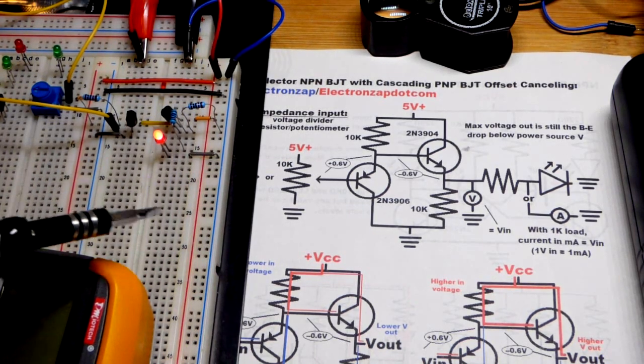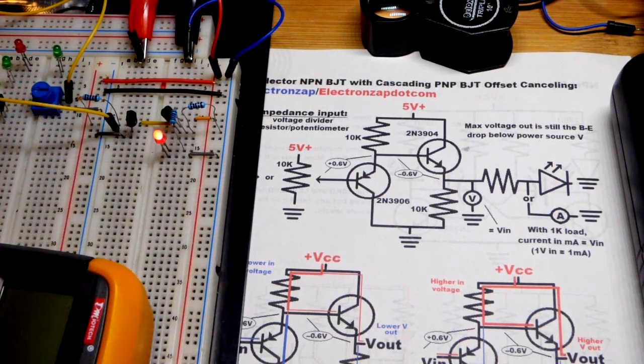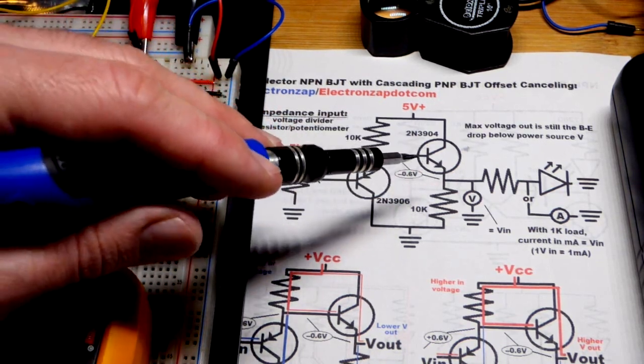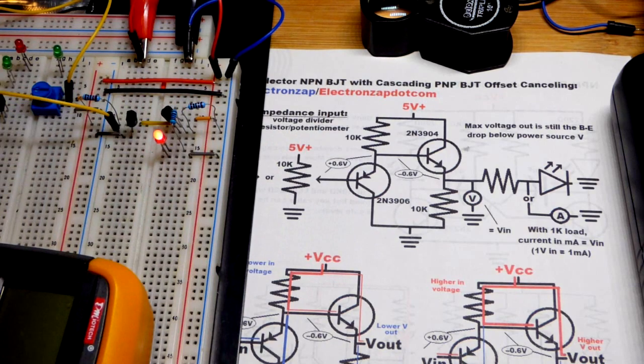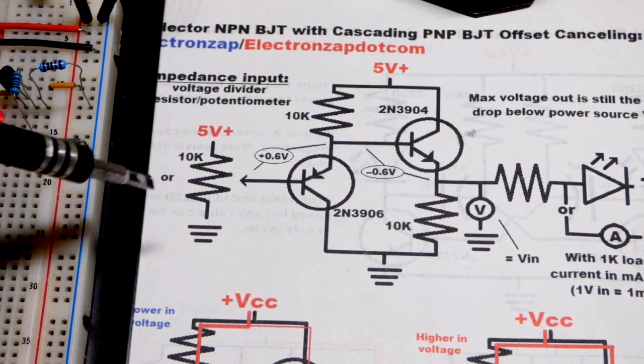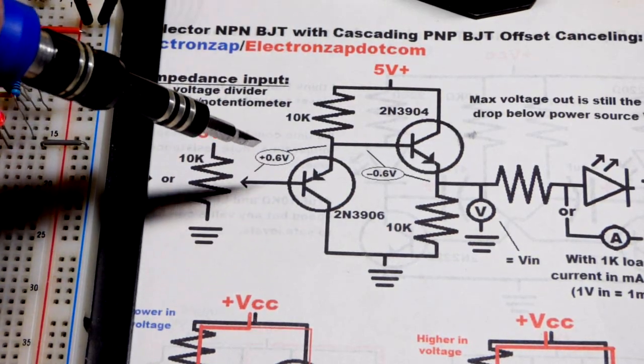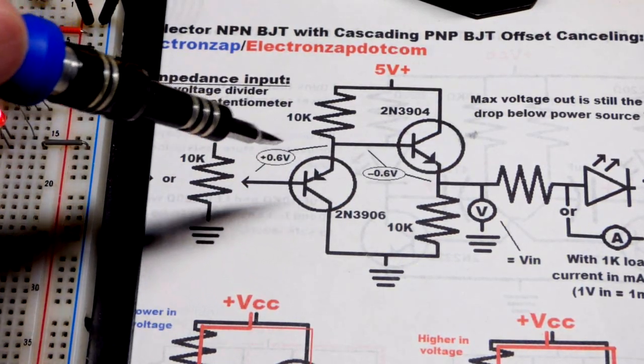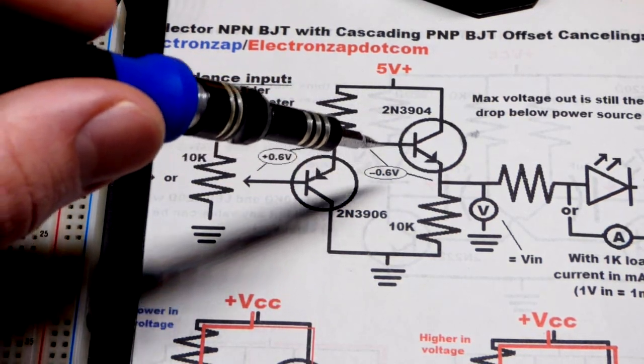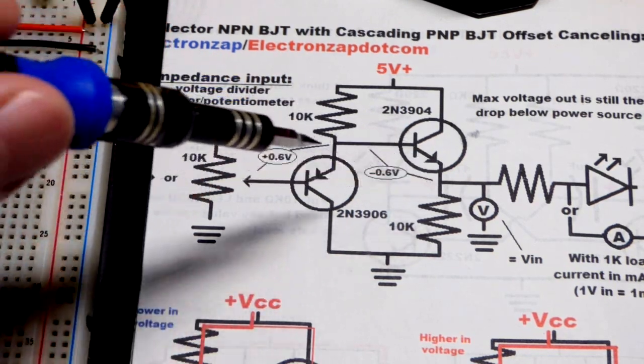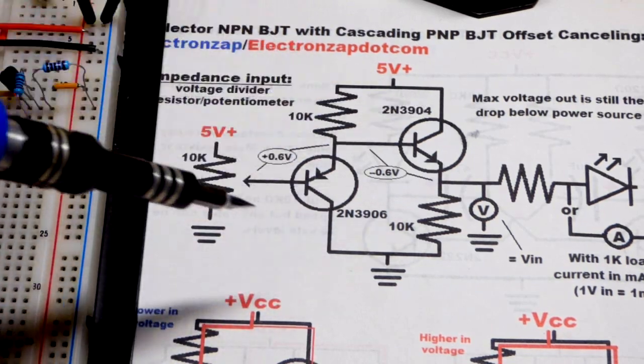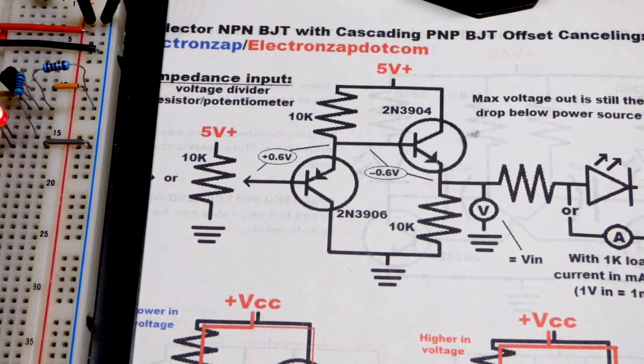In this video we're going to look at an emitter follower circuit using a bipolar junction transistor. One problem with using the bipolar junction transistor is the base to emitter voltage drop. If you use a PNP transistor you'll have an additional 0.6 volts from what you set. If you use the NPN bipolar junction transistor you'll have about 0.6 volts less than what you set at the base. So we're going to cascade them where basically you eliminate that effect.